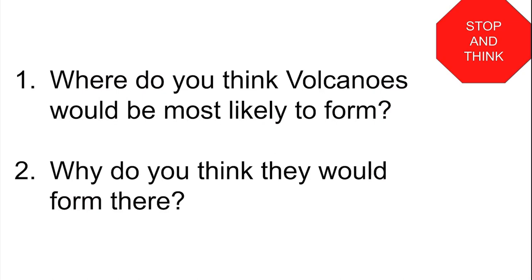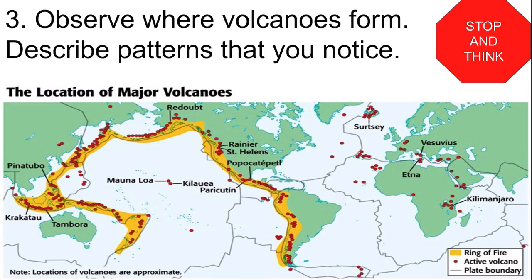Now let's address these questions. Here we see a map of where volcanoes are around the world. Please observe where these volcanoes form and describe any patterns you notice. The first thing that stands out is that this map is a little misleading — it shows a lot of volcanoes on land, over a thousand, but there are countless more beneath the ocean. These volcanoes also occur primarily along plate boundaries, and along the Pacific plate there is a ring of fire, which is very famous for having a lot of volcanoes and earthquakes.